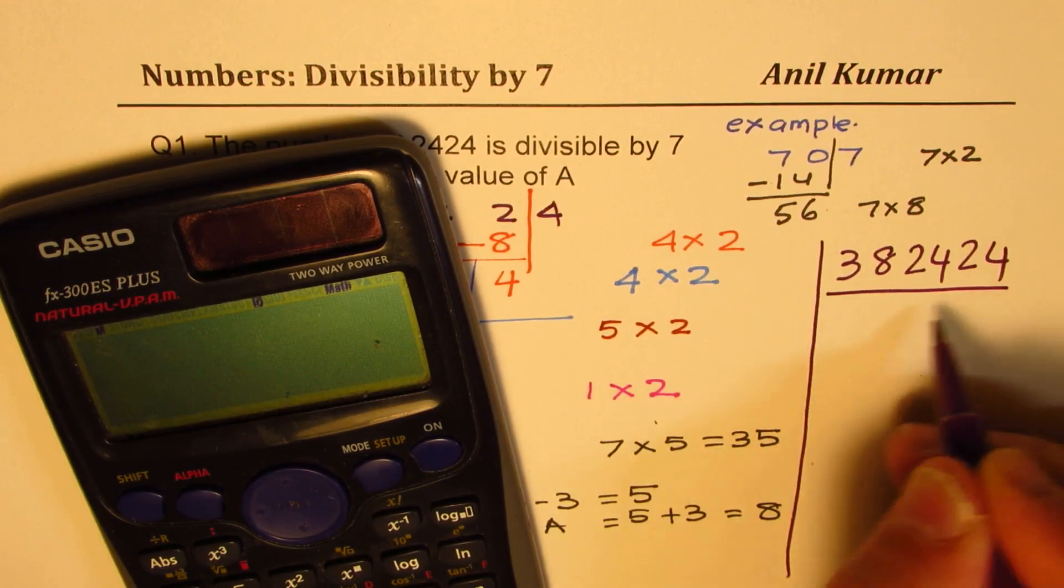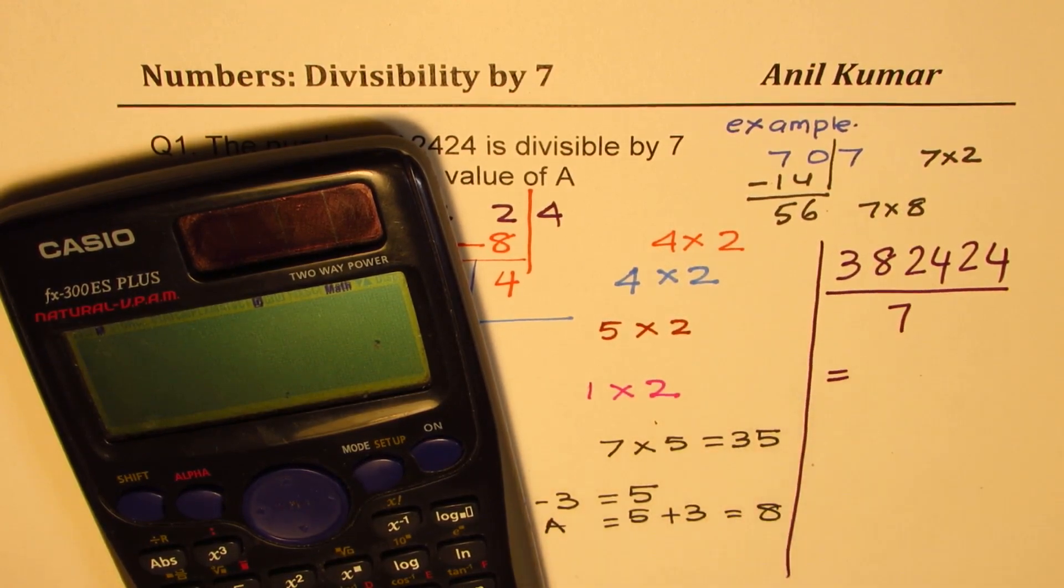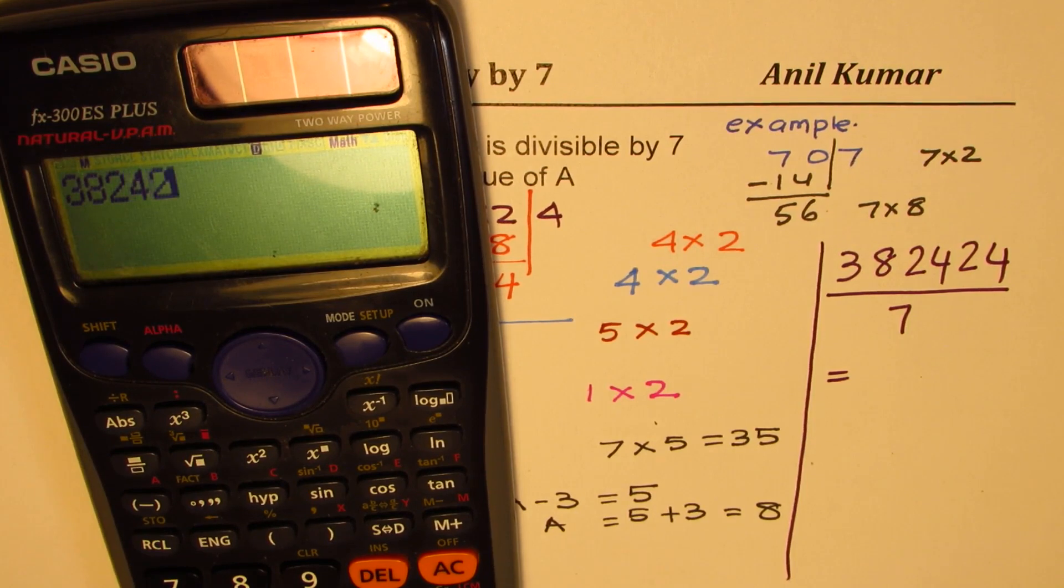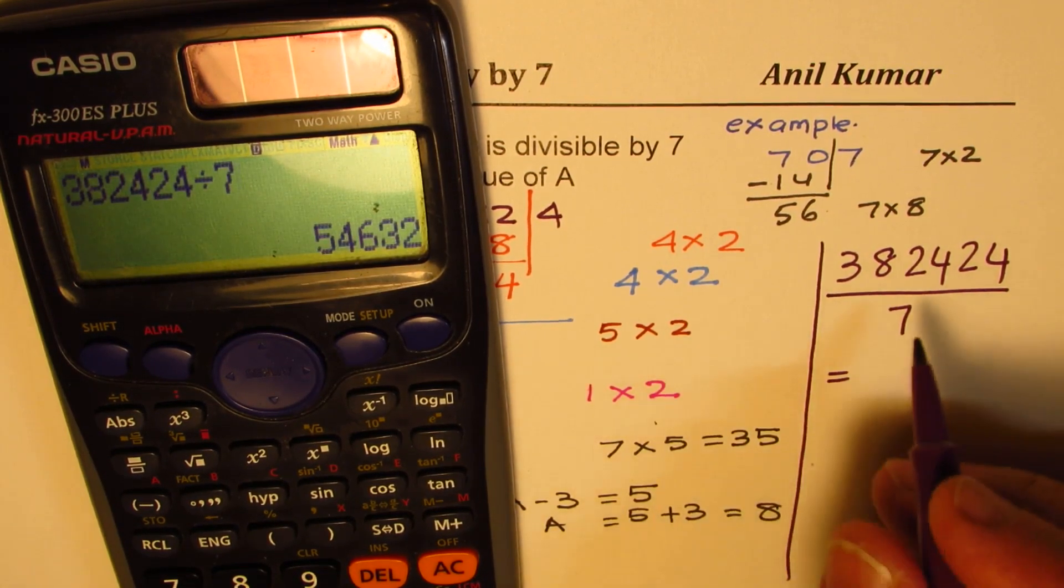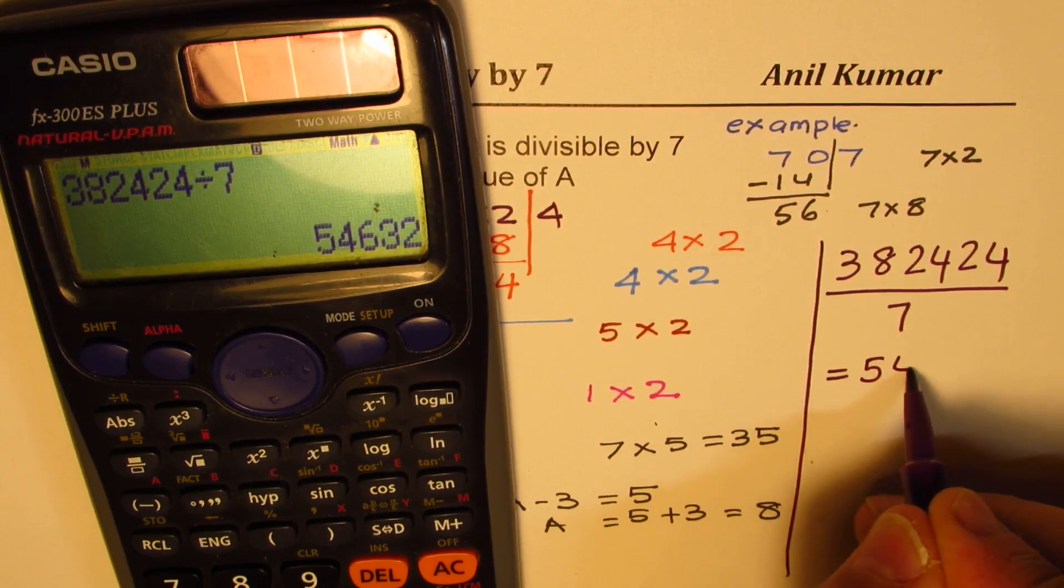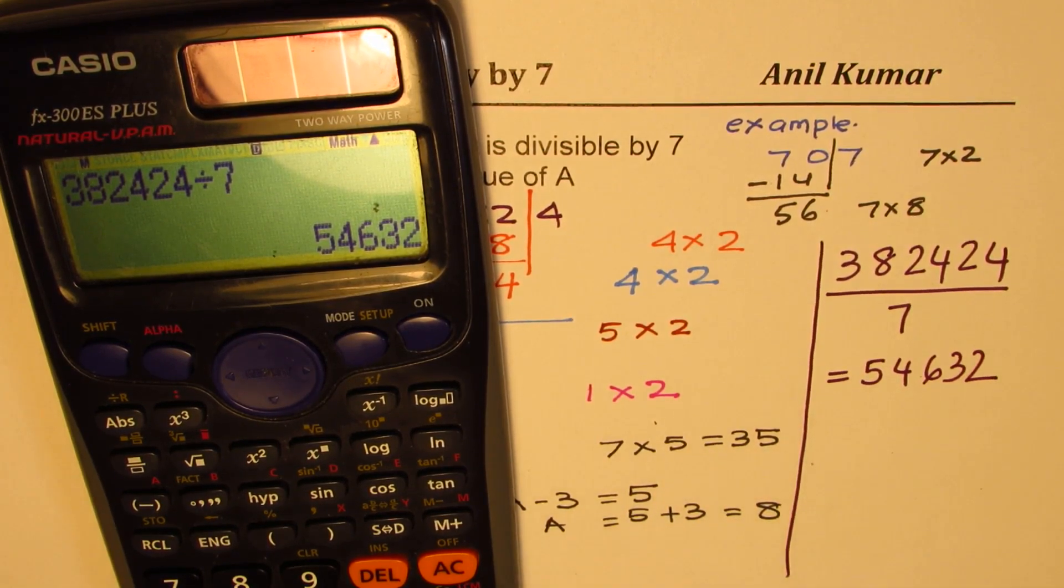So if I divide this by 7, what do I get? So we have 382424 divided by 7 equals 2, a whole number, 5, 4, 6, 3, 2. Perfect.